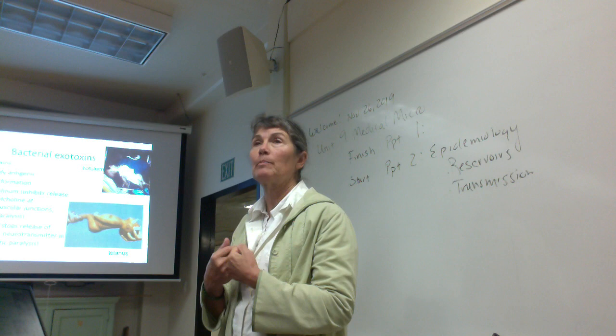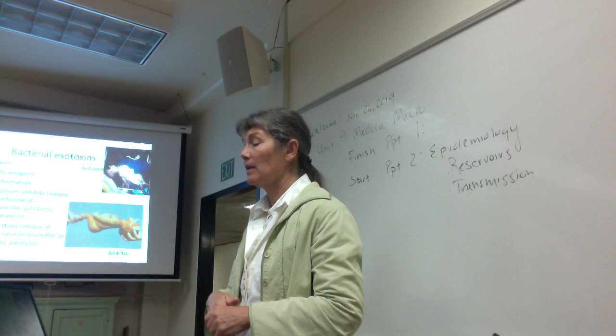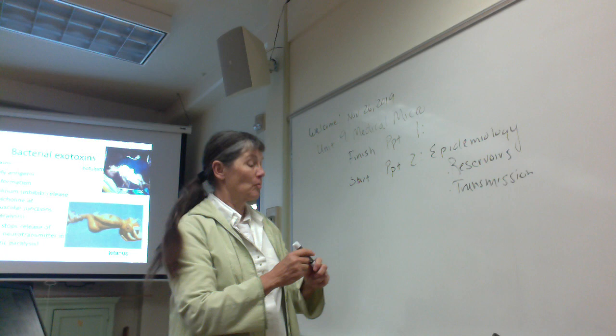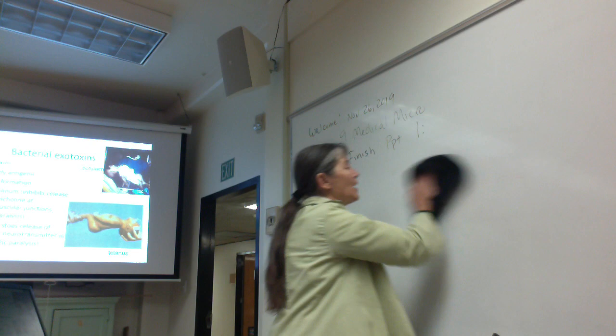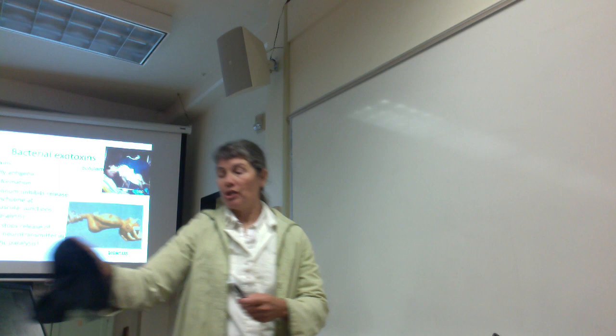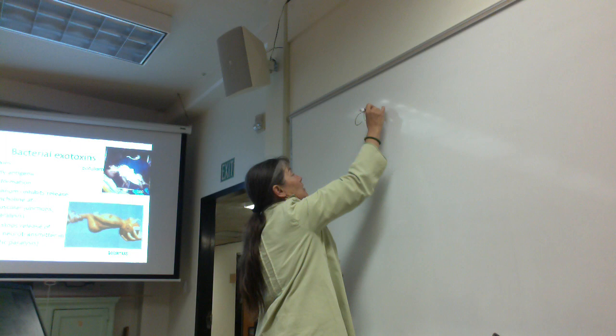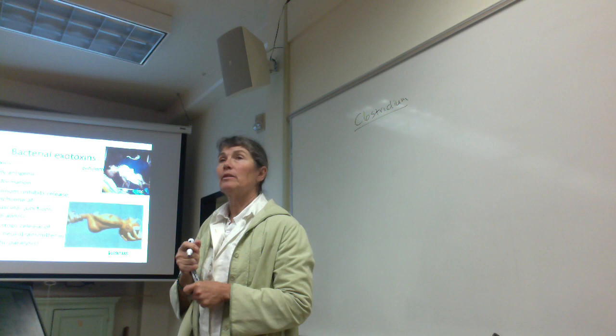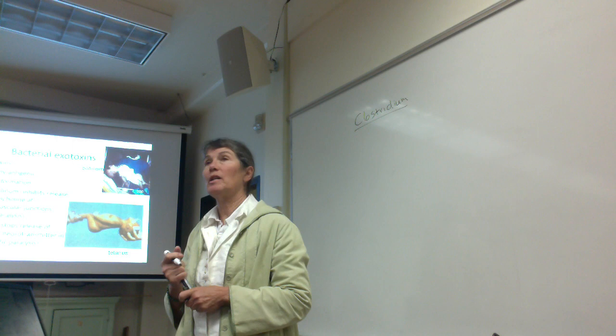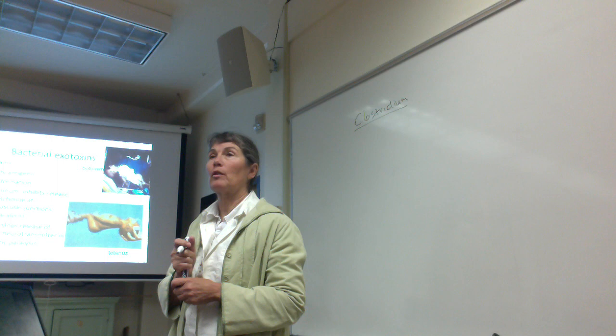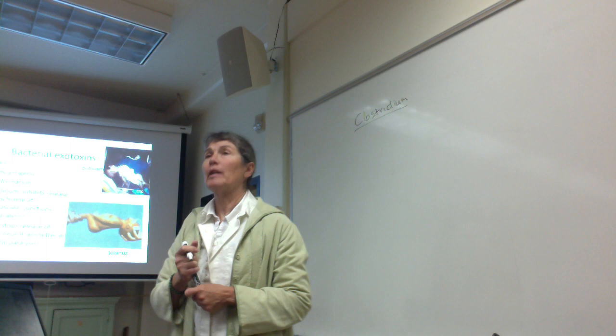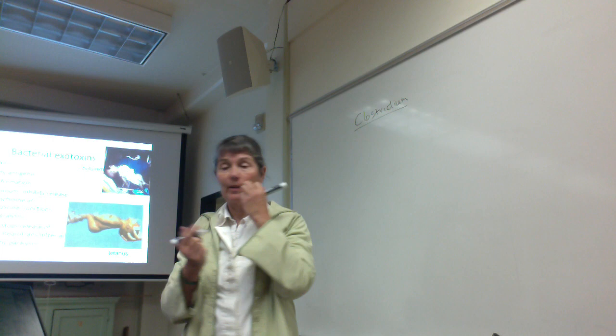Two exotoxins we'll look at in more detail are botulinum toxin and tetanus toxin. These are made by two members of the genus Clostridium. Clostridium are obligate strict anaerobes — killed in the presence of molecular oxygen because they don't make protective enzymes like superoxide dismutase or catalase. They survive in aerobic environments via endospores, which often play an important role in transmission.